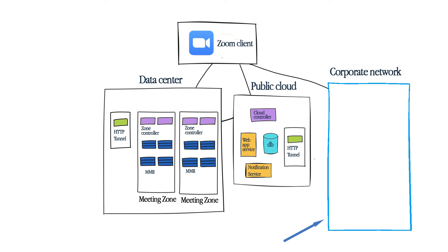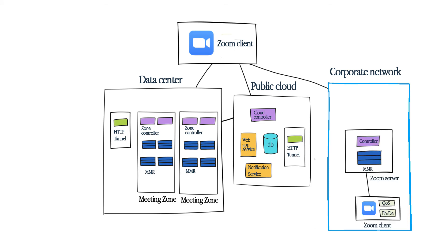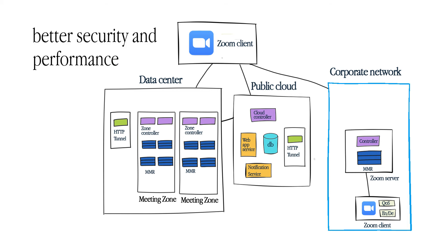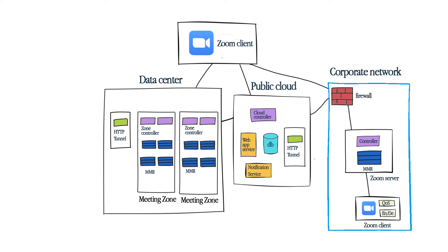Some Zoom servers are located inside the corporate network, also called on-premise deployment. Internal users connect to the internal Zoom servers directly. The communication avoids public traffic and has a higher degree of security and performance. There is a firewall between the internal network and public cloud.